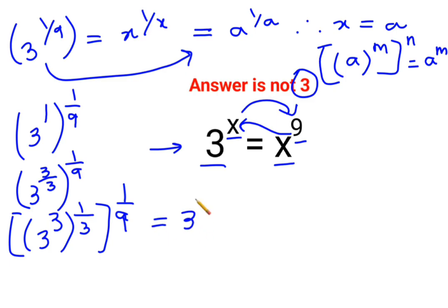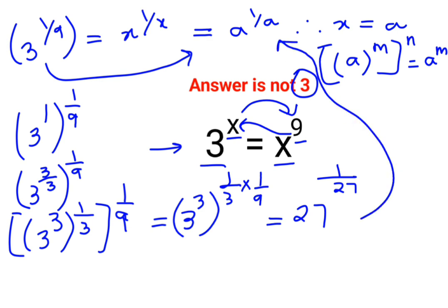So this can be written as 3 raised to 3, the whole raised to 1 upon 3, multiplied by 1 upon 9. Which is 3 raised to 3 is 27, the whole raised to 1 upon 27, which is of the form what I wanted.